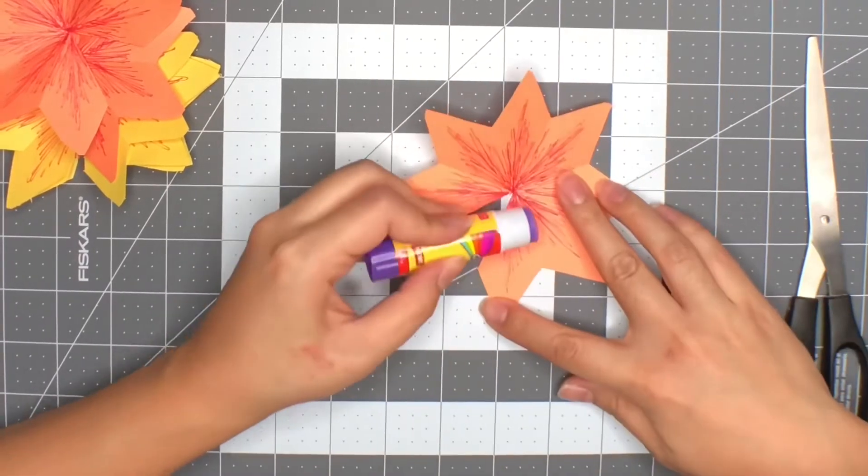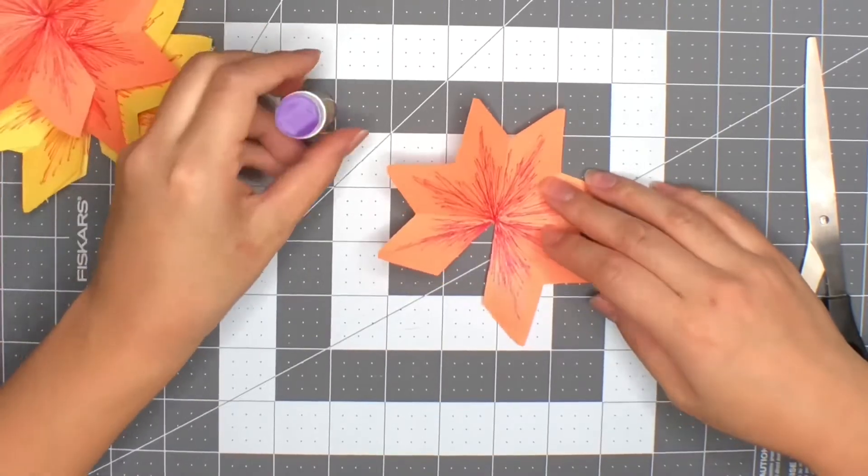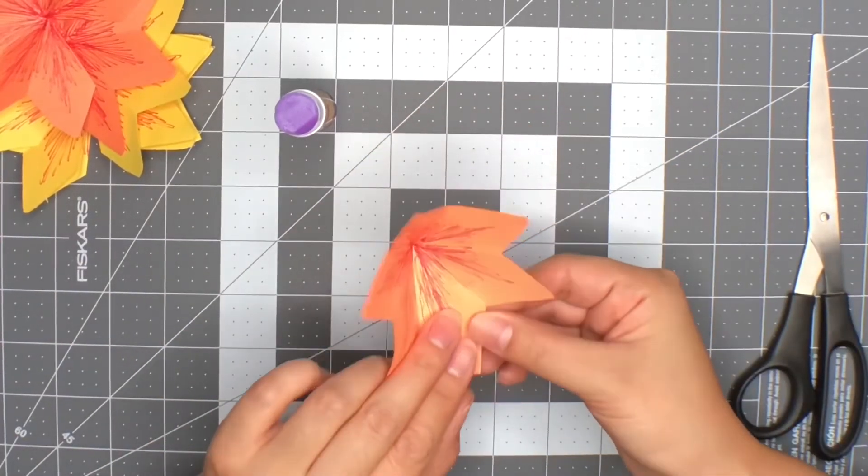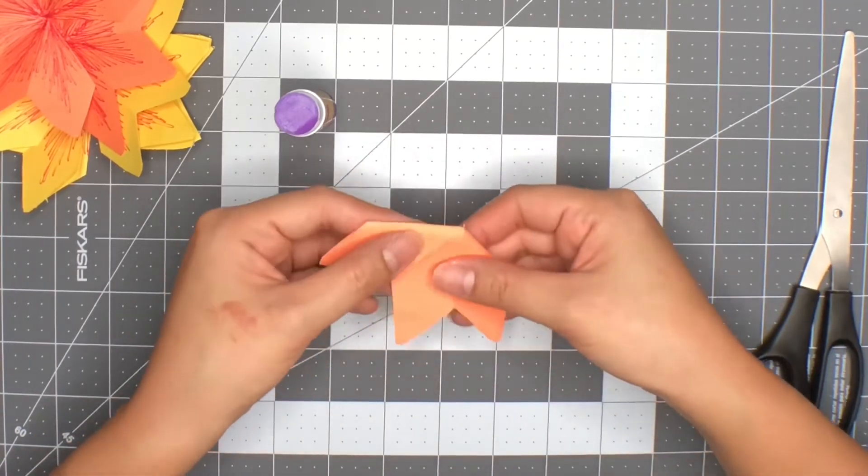Now it's time to create the flowers. Using your glue stick, you will glue 2 petals together. After gluing the petals together, you will fold the flower in half.